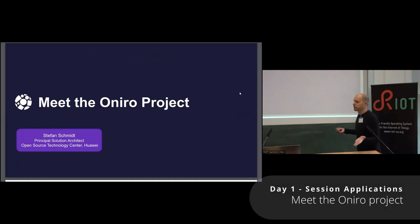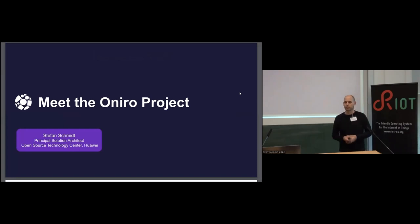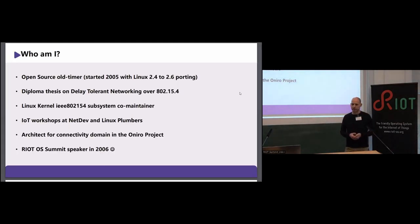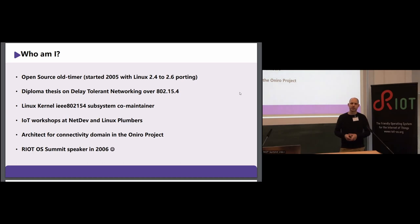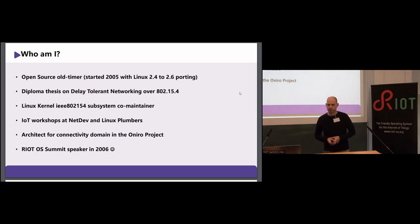Hello everybody. As Oleg already introduced me, my name is Stefan Schmidt. I'm a Principal Architect in the Open Source Technology Center at Huawei, and we have a project we're working on - the Oniro project - and I want to give you a little introduction into that. I'm a bit of an old timer. I started in 2005 porting Linux 2.4 to 2.6 on the first Linux mobile phones in Europe - there were Motorola EasyX phones around at that point.